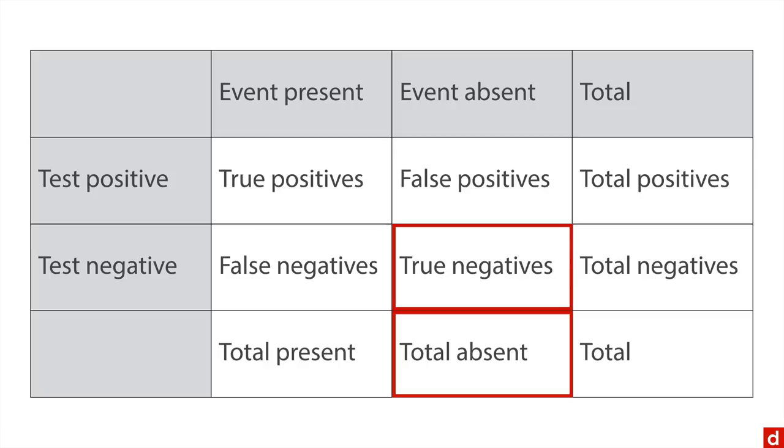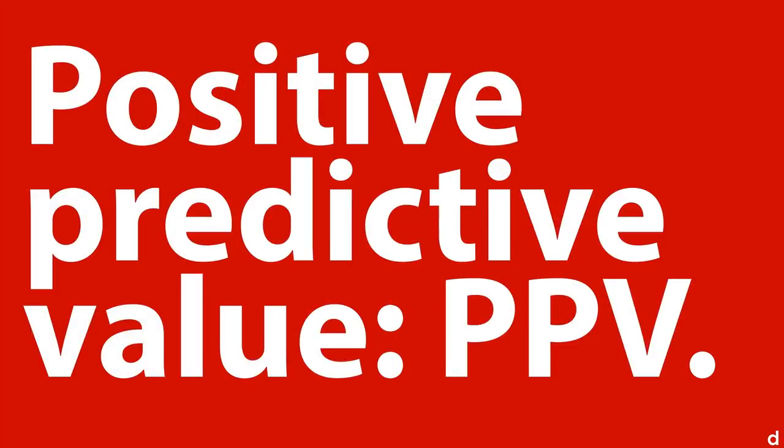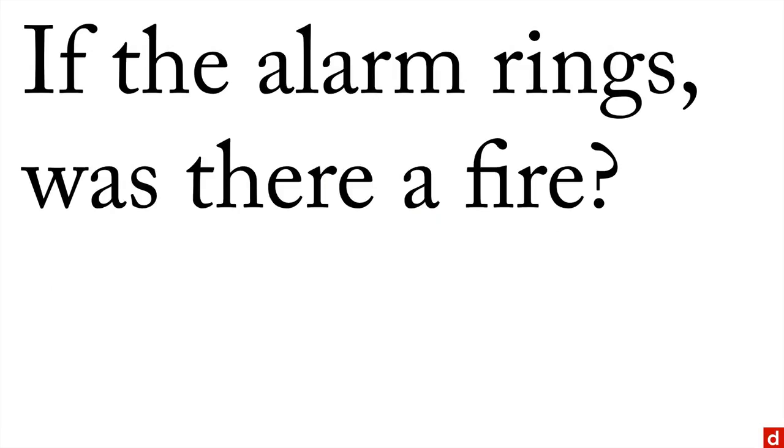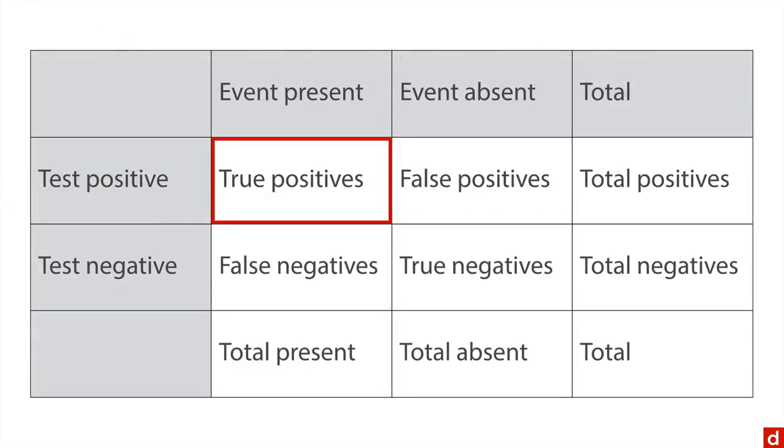Now, those are looking at columns. You can also go sideways across rows. So the first one there is positive predictive value, often just abbreviated as PPV. And we flip around the order a little bit. This one says: if the alarm rings, was there a fire? So now you're looking at the true positives and dividing it by the total number of positives. Total number of positives is anytime the alarm rings. True positives is because there was a fire.